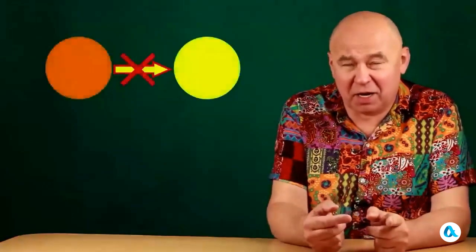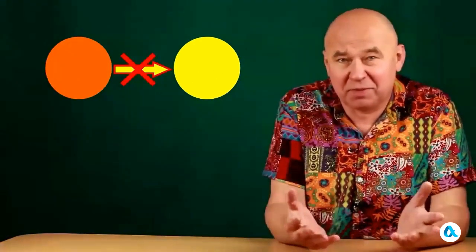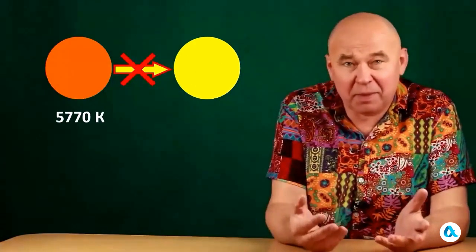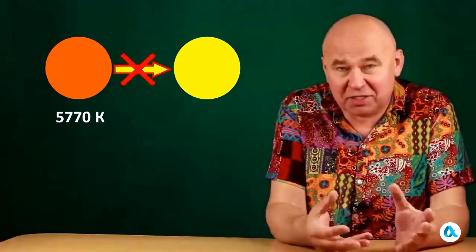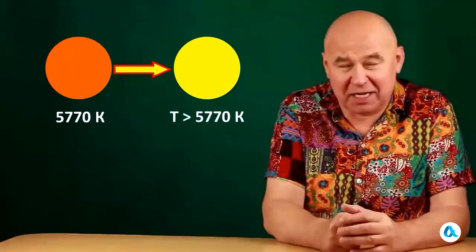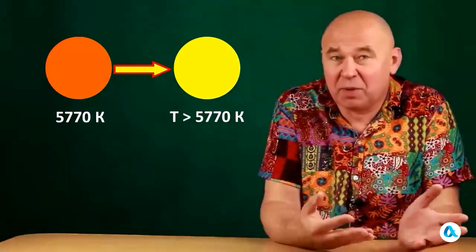Our first reasoning will be based on the second law of thermodynamics, which in one of its formulations states that heat cannot transfer spontaneously from a colder body to a hotter one. The surface temperature of the sun is approximately 5,770 degrees Celsius. If we could somehow focus the rays from the sun and heat an object to a higher temperature than the sun's surface, it would result in heat spontaneously transferring from a colder body to a hotter one, which is impossible. Consequently, we have an upper limit — we cannot heat anything with sunlight to a temperature higher than the surface temperature of the sun.